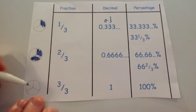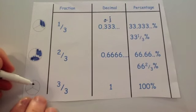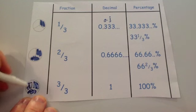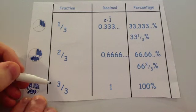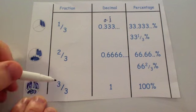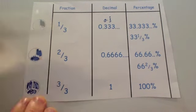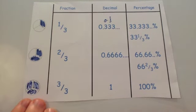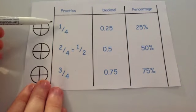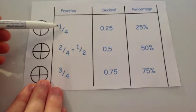Three thirds: you'd shade in all three out of three sections — the whole thing. As we've seen, whenever the numerator is the same as the denominator, that's one, or 100%. Now let's look at quarters. One quarter is one over four.